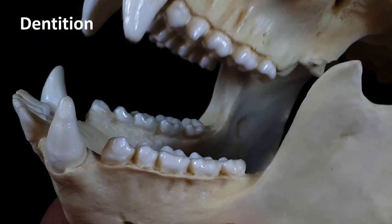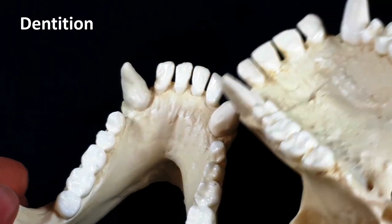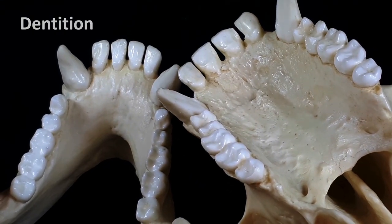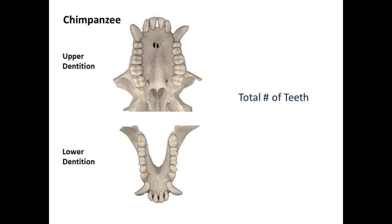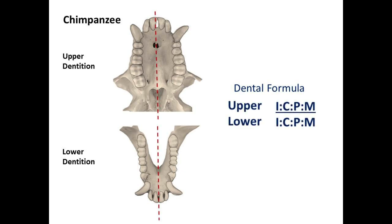Now let's take a closer look at the upper and lower dentition. For this lab you are required to count the total number of teeth for each skull. You are also required to determine the dental formula for each skull. The dental formula is simply half of the upper dentition over half of the lower dentition, broken down by type of tooth.